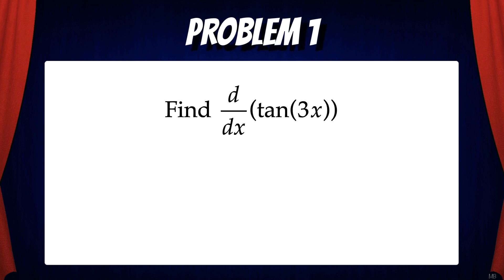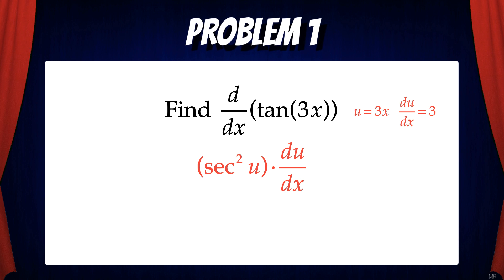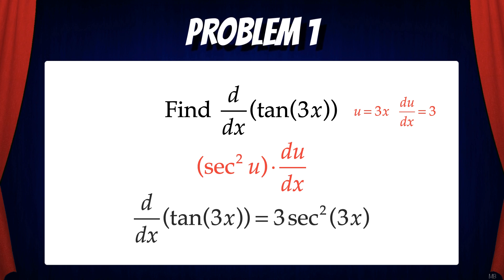Let's look at some examples. Problem 1: Find the derivative of tan(3x). Here we can see that 3x is the inner function, so we'll call that u. That means du/dx equals 3. So the derivative of tan u is secant squared u times du/dx. That means the derivative of tan(3x) is secant squared(3x) times 3. Note that I've put the 3 in front of the secant squared to make the final answer look more organized.